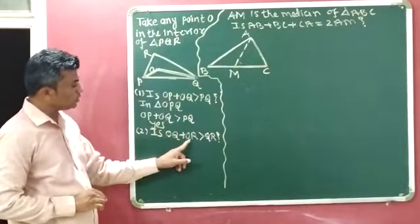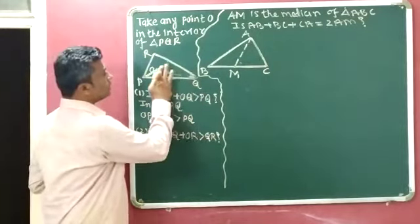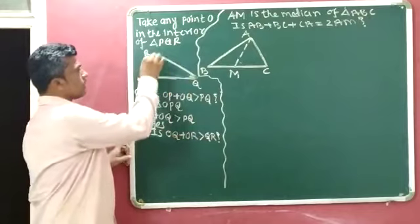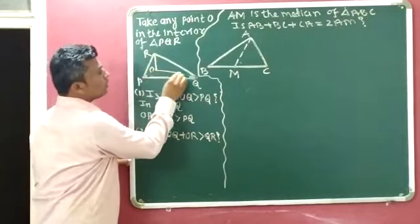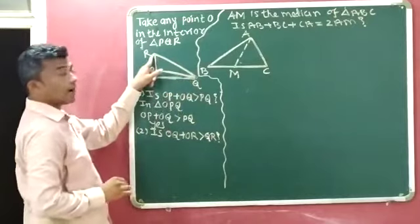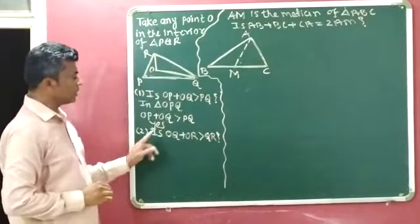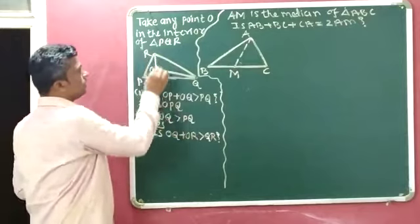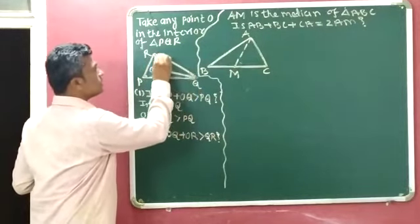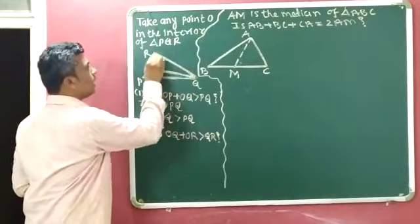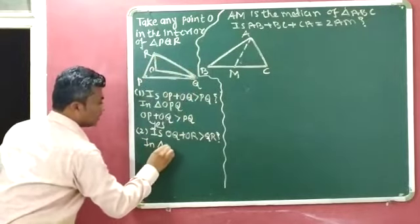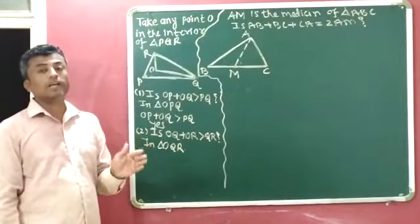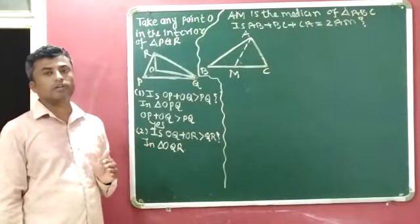Now for the second part: is OQ plus OR greater than QR? We will join O to R and O to Q. In triangle OQR, according to the side length property of the triangle — the sum of the length of any two sides of the triangle is greater than the third side.